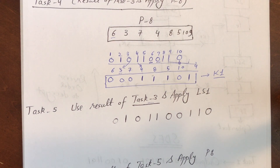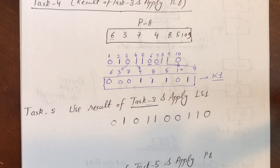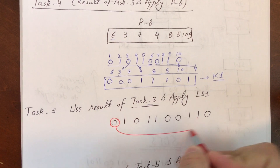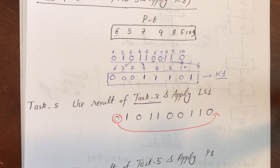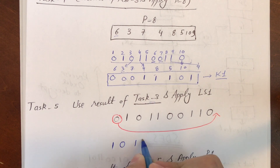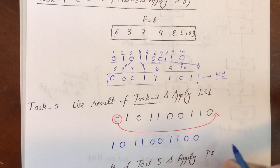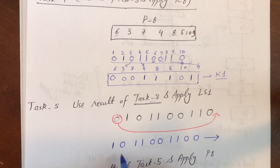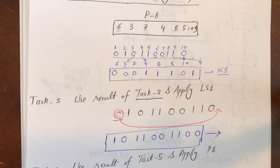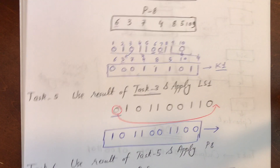Task 3 output is: 0 0 1 1 0 1 1 0 0 1 1 0. Apply Left Shift 1 exactly the same way — move the extreme left bit all the way to the right. The result becomes: 1 0 1 1 0 0 1 1 0 0. This is the Task 5 output.